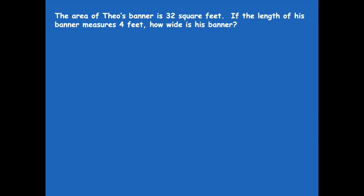Let's talk about the information that we know. What do we know about the area and the side lengths? We know that the area is 32 square feet and we know that the length measures 4 feet. What information do we not know? We don't know how wide his banner is — that's what we have to solve for.